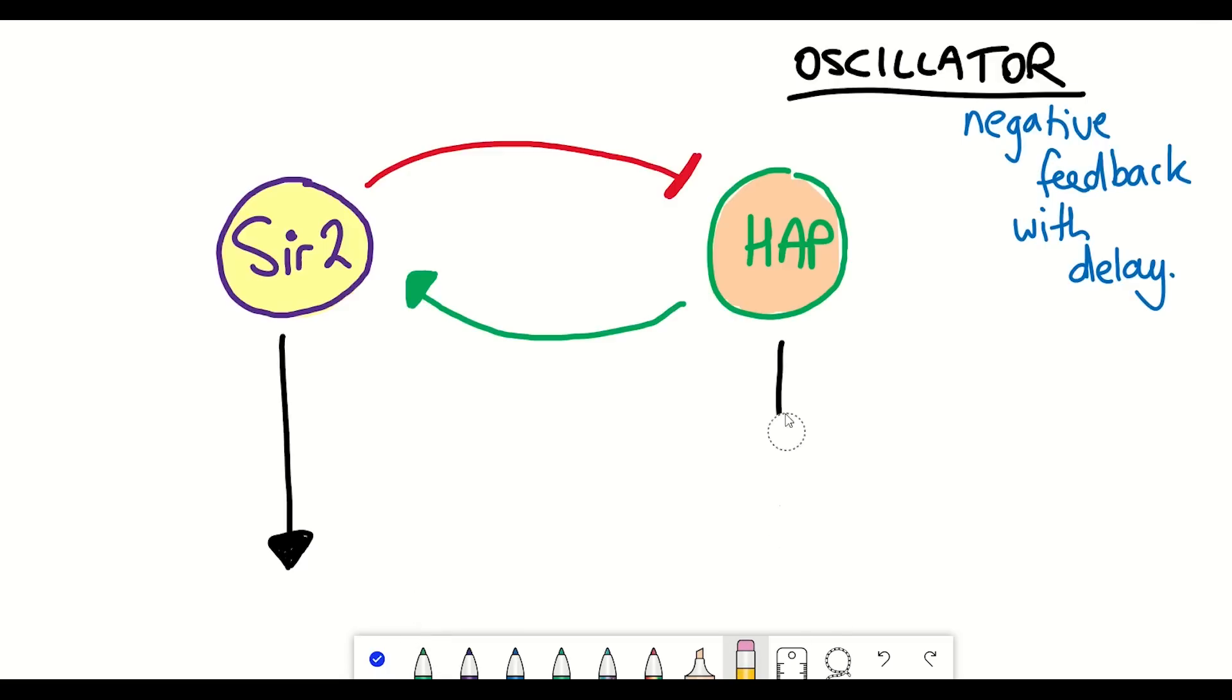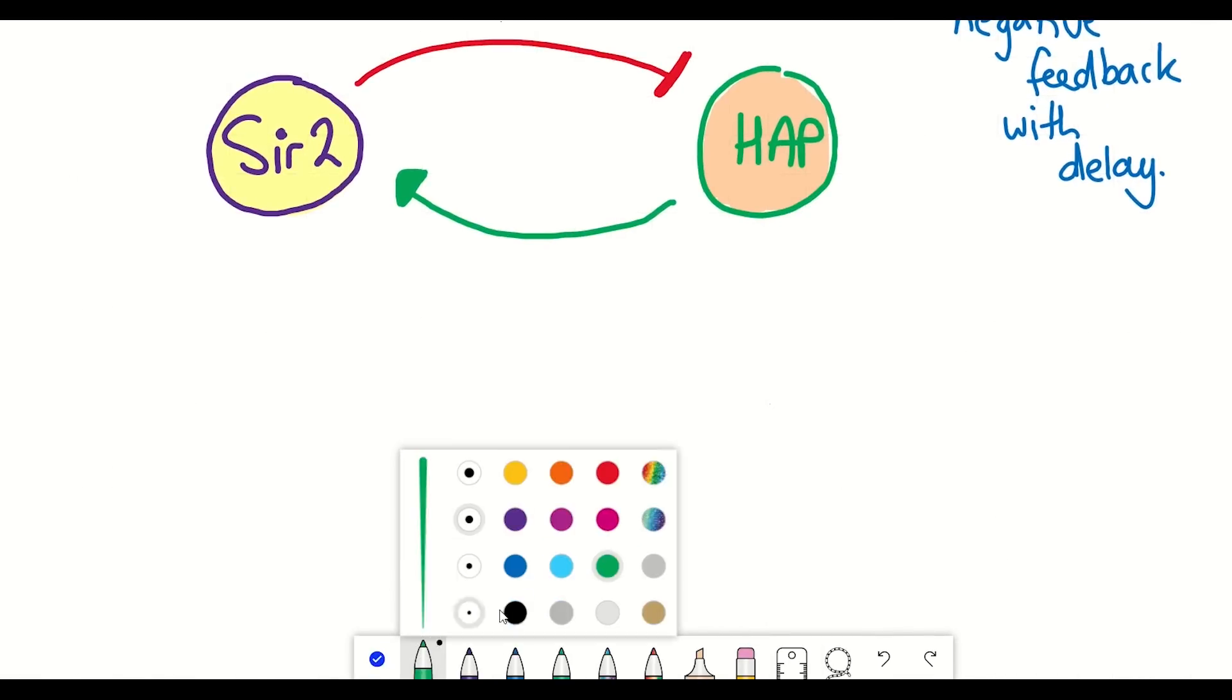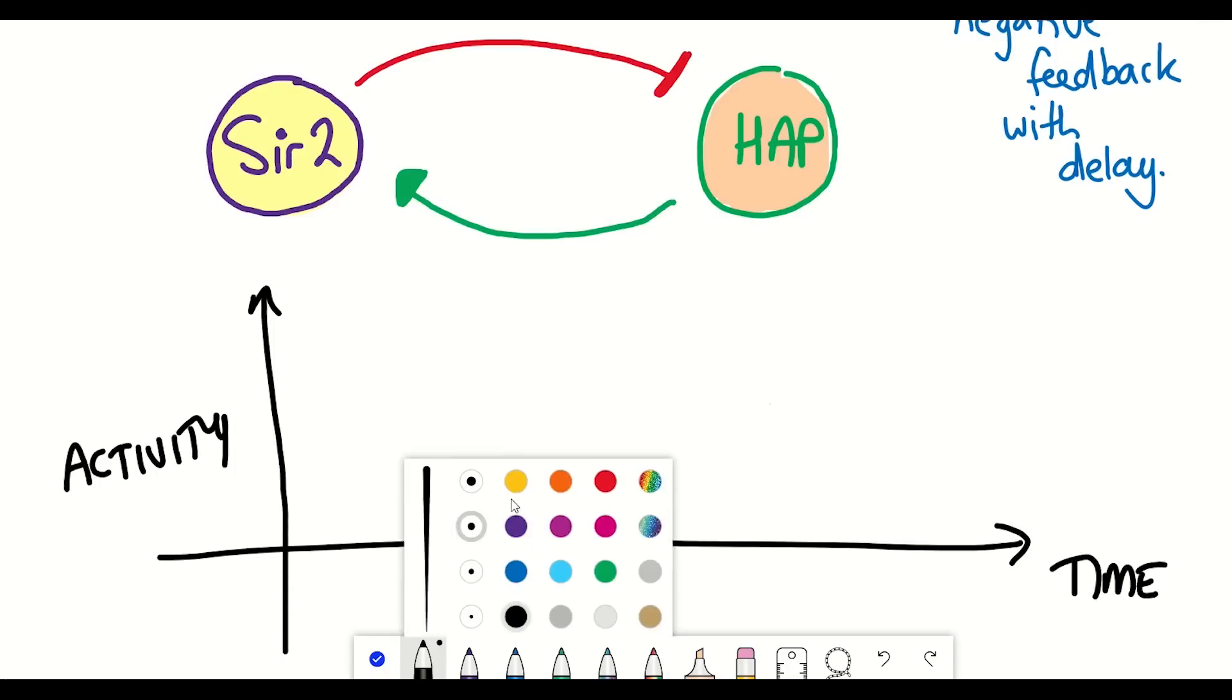This time let's imagine that SIR2 still represses HAP, but HAP is now a strong activator of SIR2. Therefore if we repress HAP it prevents more SIR2 activity.